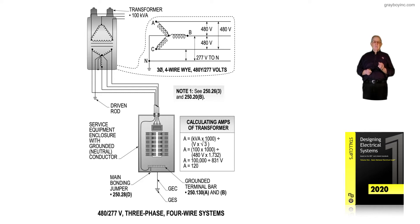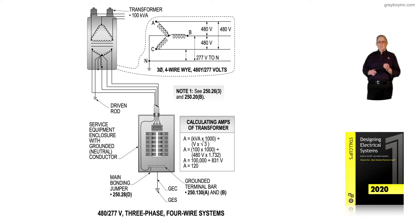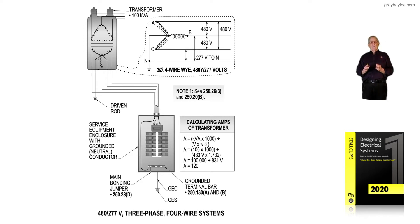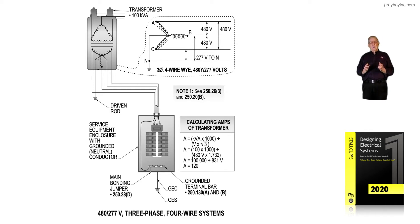Notice in this illustration, NEC 250.26 item 3 is used, along with 250.20B. These two work together to show that if the transformer is grounded, you have to ground at the service equipment, and indicate how many usable ungrounded conductors to ground can be present in this Y system.